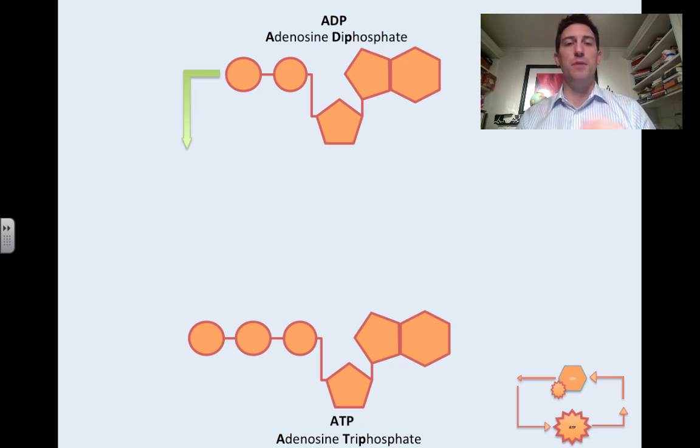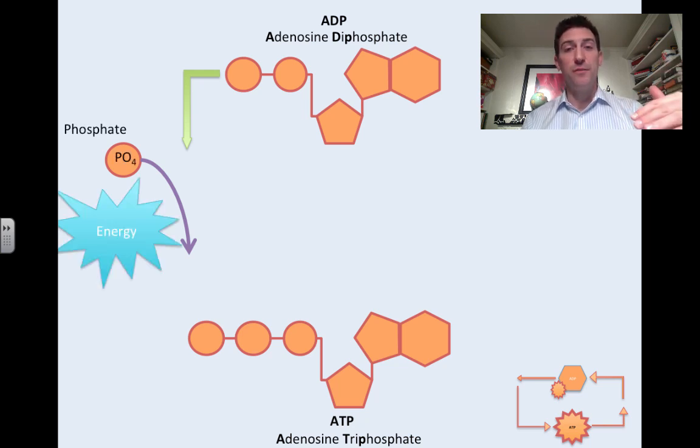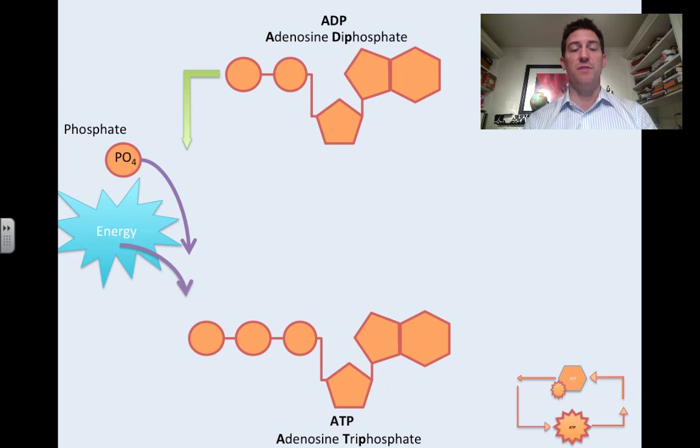So we start off with the ADP, which is low energy. Something has to happen, and in this case in photosynthesis, this phosphate group is floating around inside the thylakoid. It's already there. But then we need energy from the sun to come in here, and when energy from the sun comes in and hits the chlorophyll, through a series of reactions it causes that phosphate to get attached to the ADP, therefore changing it from ADP diphosphate into ATP triphosphate.